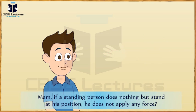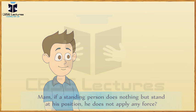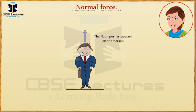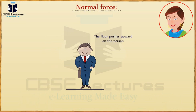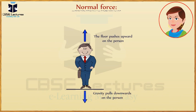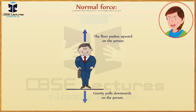If a standing person does nothing but stand at his position, he does not apply any force. As a matter of fact, he does apply force. He applies force to the ground and the ground applies some force back at him, which is equal and opposite with respect to the force applied by the man. This force is called normal force.